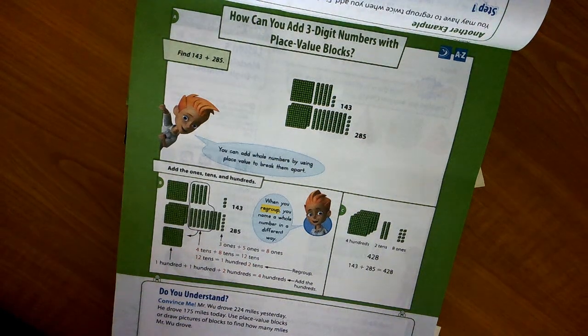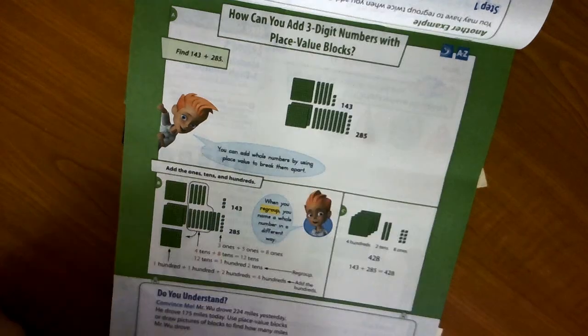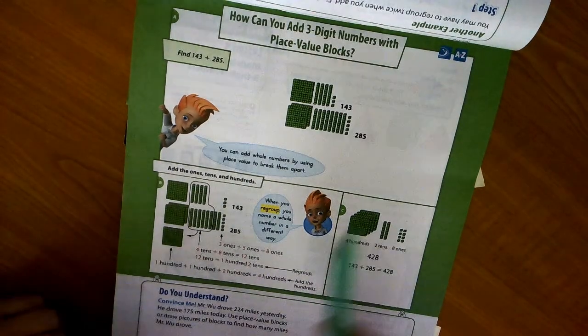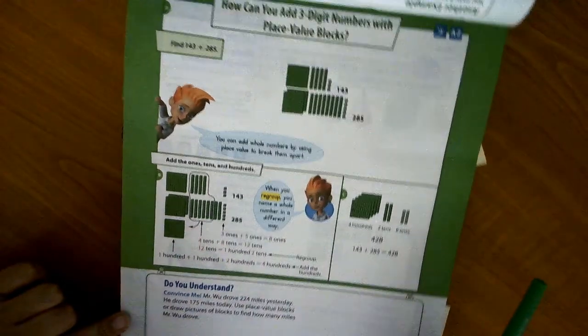Hi, Dennis ISD students. This is Ms. Gonzalez. Today we're going to be talking about how to add three-digit numbers with place value blocks. We're going to be looking at page 912 in your Envisions book, Volume 2.